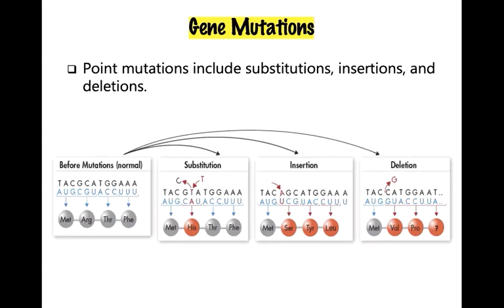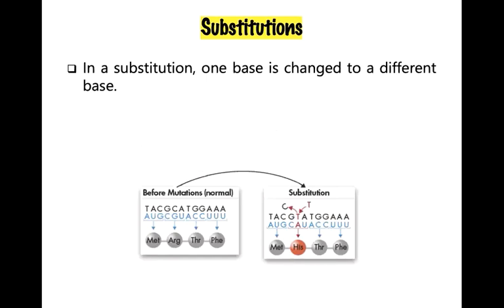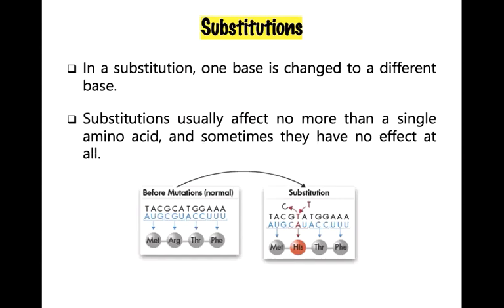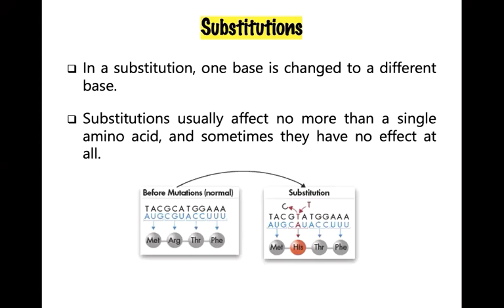In substitution, one base is changed to a different base. Substitution usually affects no more than a single amino acid, or sometimes has no effect at all. In this example, the base cytosine is replaced by thymine, resulting in a change in the mRNA codon from arginine (CGU) to histidine (CAU). However, a change in the last base of the codon from CGU to CGA would still specify the amino acid arginine.